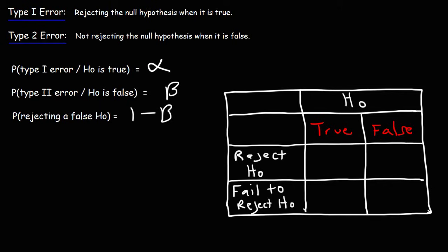If the null hypothesis is true and we reject it when it's true, that's an error — specifically, that is a type 1 error. If the null hypothesis is false and we reject it, then we've made a good decision; that is not an error. If the null hypothesis is true and we fail to reject it, that is also a good decision. But if the null hypothesis is false and we don't reject it, that's bad — we don't want to accept a false null hypothesis. That is the type 2 error.